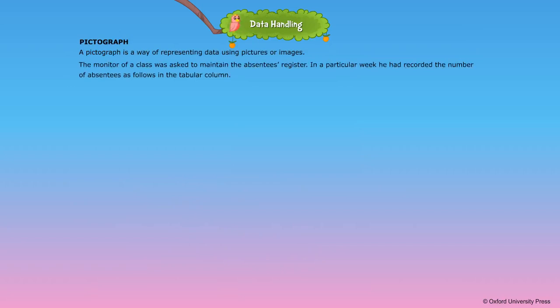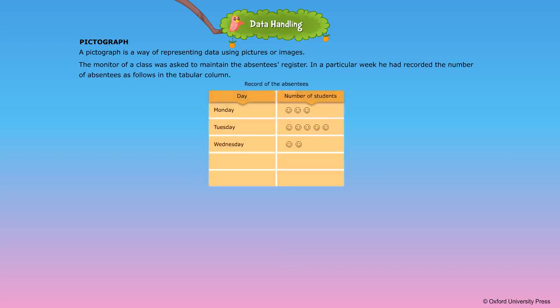Pictograph. A pictograph is a way of representing data using pictures or images. The monitor of a class was asked to maintain the absentees register. In a particular week, he had recorded the number of absentees as follows in the tabular column.